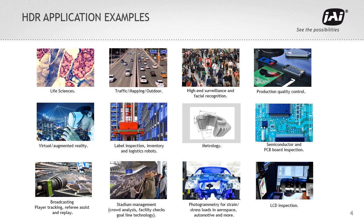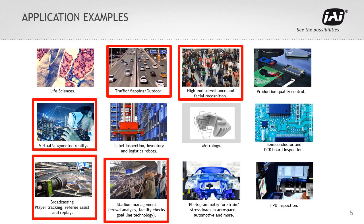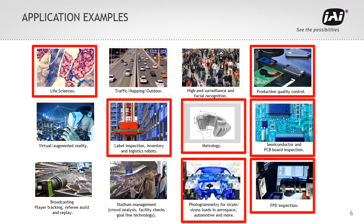Looking at various machine vision applications, there can be many scenarios where high dynamic range imaging may be required. There are outdoor sports and virtual reality applications such as vision systems for traffic, high-end surveillance, sports broadcasting, stadium management, and virtual reality. And then there are applications such as life science, electronics and flat panel inspection, metrology, and inspection of metals such as car bodies. All these applications face the challenge of the camera dynamic range not being enough to produce a good image contrast.